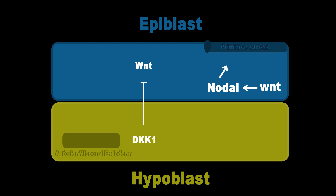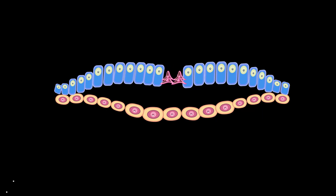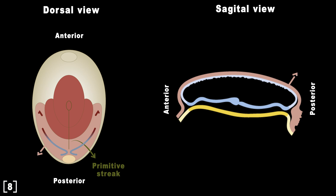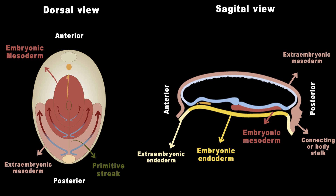The Wnt molecule induces the expression of Nodal, which is responsible for activating the EMT transition of the epiblast cells and making the primitive streak. This causes the visceral endoderm cells to migrate to the anterior part and start releasing Nodal inhibitors such as Lefty1 and Cerberus, which confines Nodal activity at the posterior side and forms the posterior-anterior axis of the embryo. The epiblast cells that travel between the epiblast and hypoblast replace some of the hypoblast cells and make the embryonic endoderm. They also make the extraembryonic mesoderm, which gives rise to a very important structure called the connecting stalk that allows blood vessels to pass between the embryo and yolk sac. The body stalk later becomes the umbilical cord.